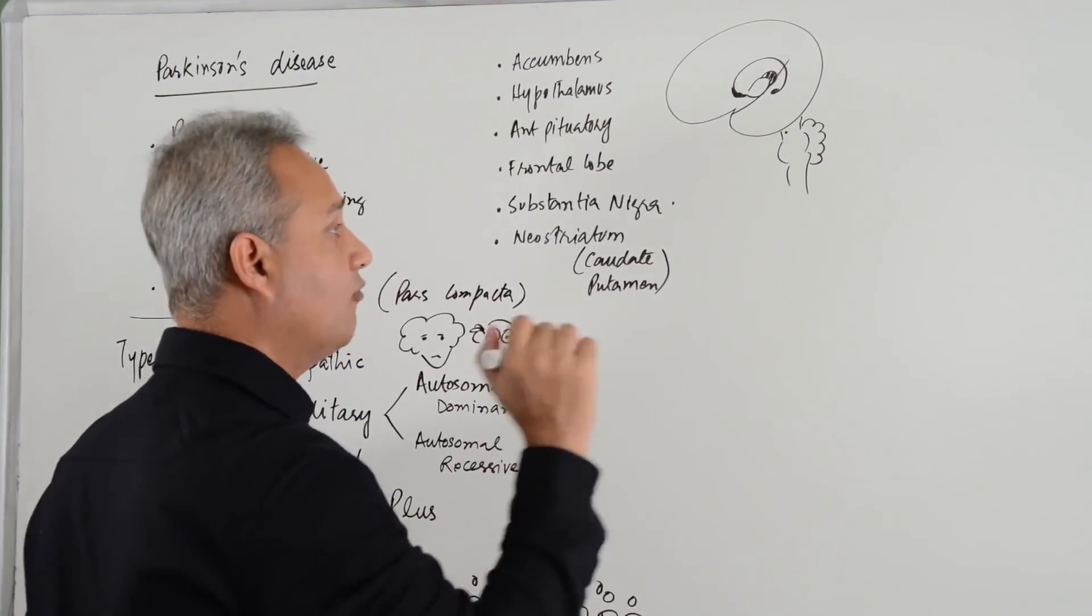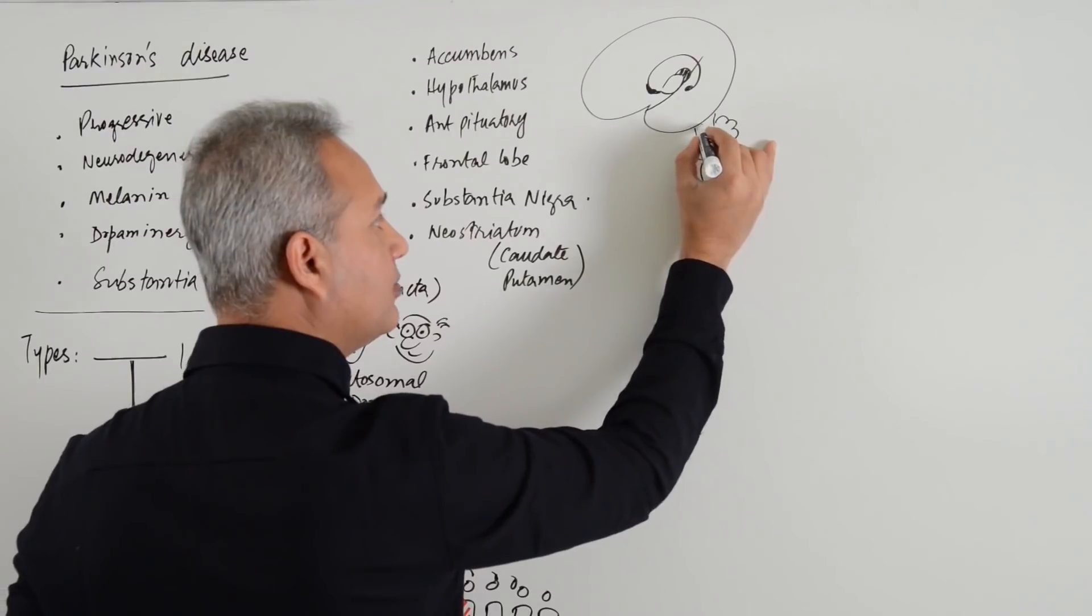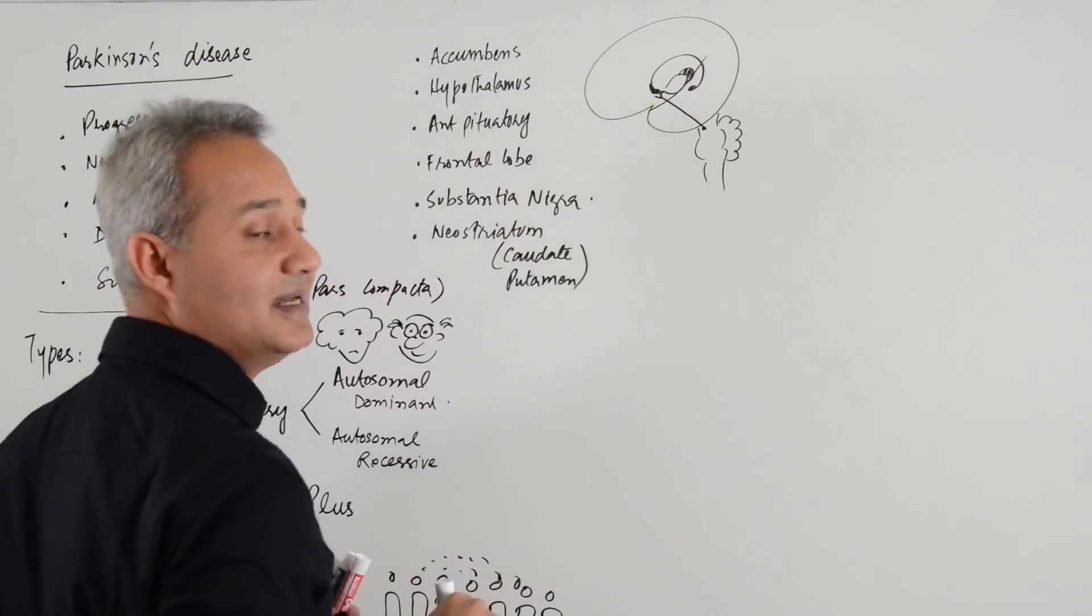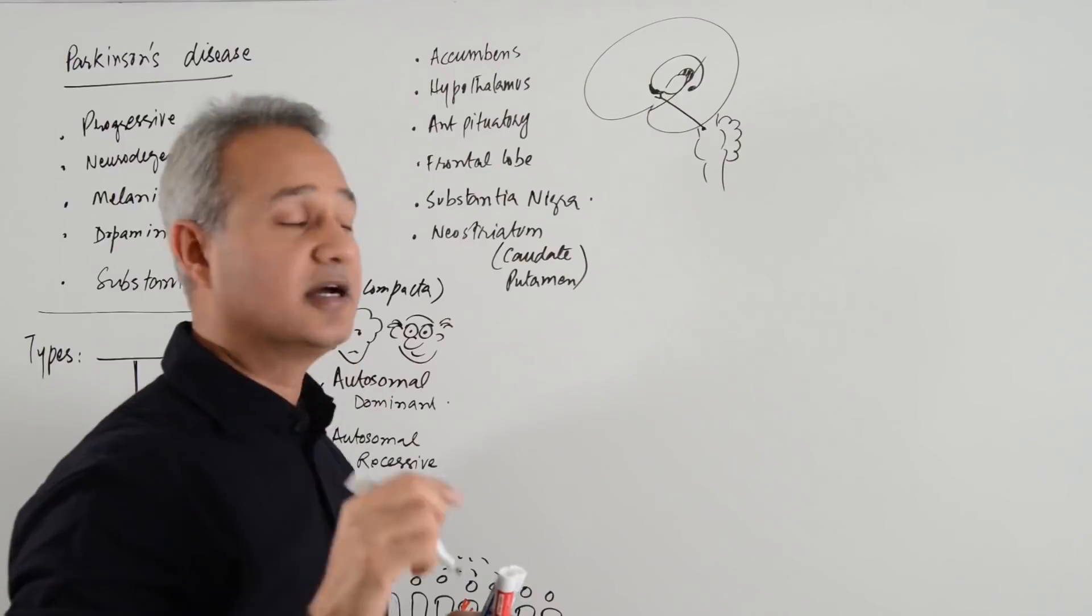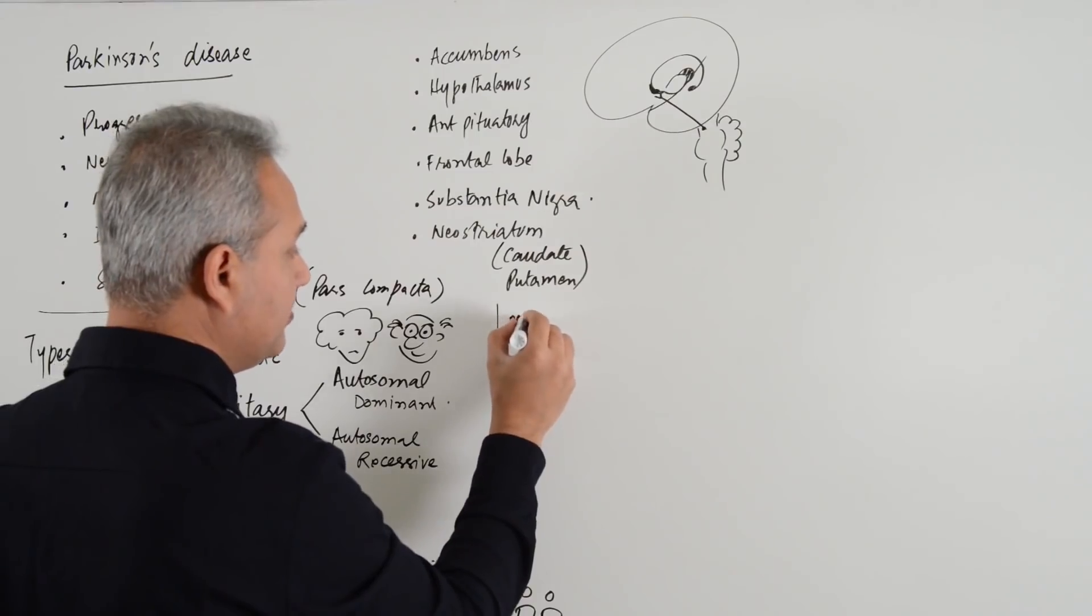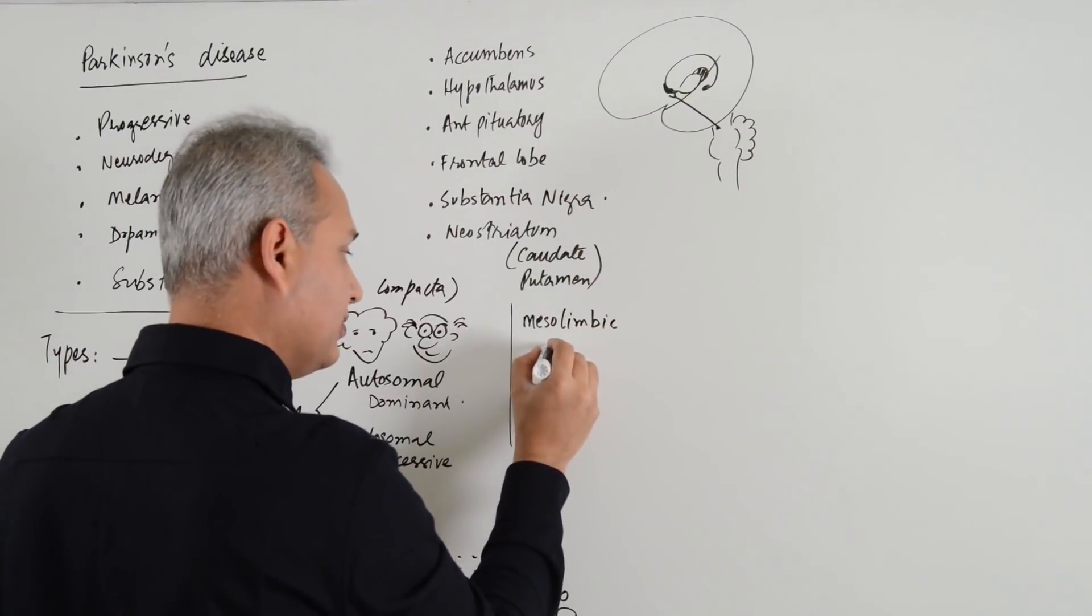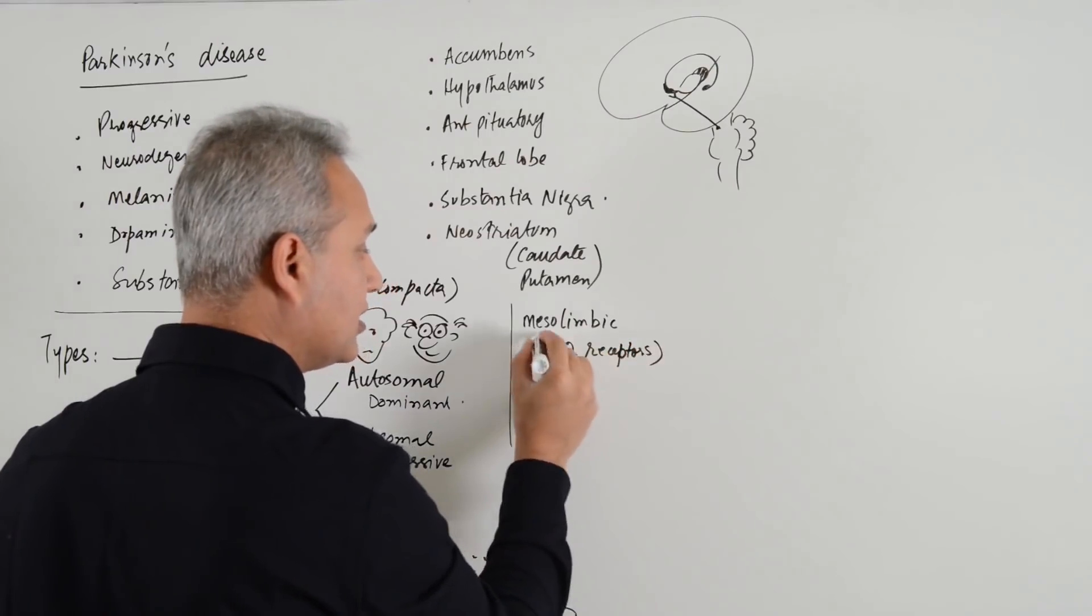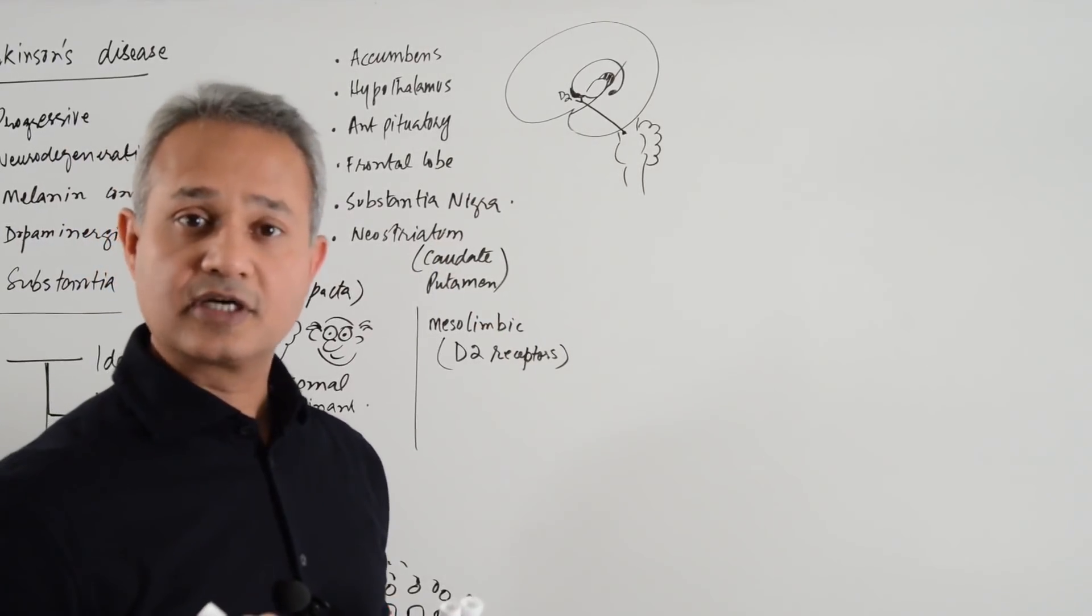There are four dopaminergic pathways. One pathway is called mesolimbic. So, from the midbrain to the limbic system, especially the nucleus accumbens. This is the pathway that when it has an abnormality causes schizophrenia. This mesolimbic pathway is dopaminergic. D2 receptors are present here in the nucleus accumbens.